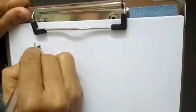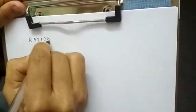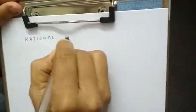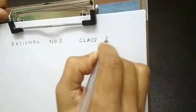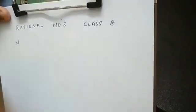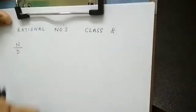Today we are going to learn rational numbers for class 8. What are rational numbers? Rational numbers are those which have a numerator and a denominator.